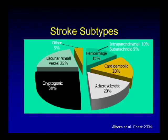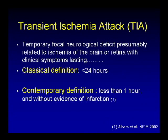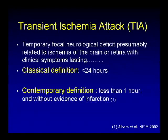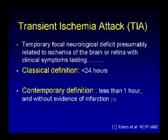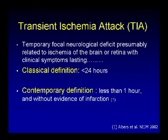We now have two definitions of transient ischemic attack. The first is a temporary focal neurological deficit, presumably related to ischemia of the brain and/or the retina. The classic definition, as most of us learned it, is less than 24 hours. Modern neuroimaging and better understanding of pathophysiology have led to a contemporary definition: less than one hour and/or without evidence of infarction on imaging — a concept established in the early 2000s. Most individuals presenting with stroke-like symptoms lasting more than one hour typically have evidence of infarction.